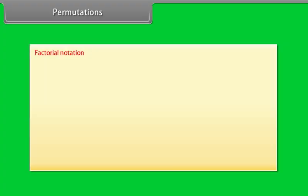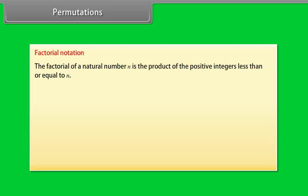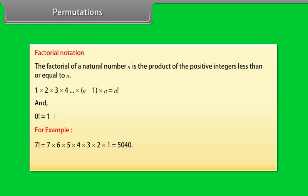Factorial notation. The factorial of a natural number N is the product of the positive integers less than or equal to N: 1 into 2 into 3 into 4 up to N minus 1 into N, which equals N factorial. And 0 factorial is equal to 1. For example, 7 factorial equals 7 into 6 into 5 into 4 into 3 into 2 into 1, which equals 5040. And 5 factorial equals 5 into 4 into 3 into 2 into 1, which equals 120.